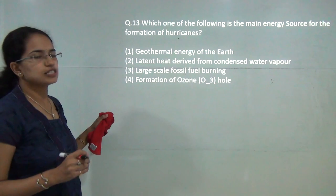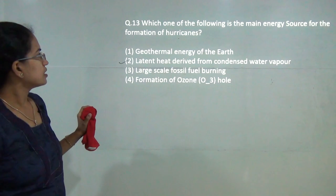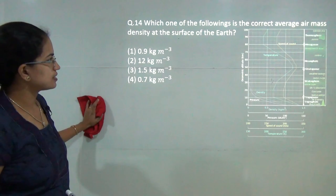Next question: latent heat derived from condensed water vapor is the main source of energy for the formation of hurricanes. So 2 would be the correct answer here.